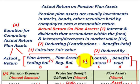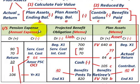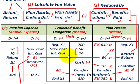Then we would subtract out the difference between the contributions made to the pension fund minus the benefits paid to the retirees. We're really going to be looking at three accounts: our pension expense — the annual expense — our pension benefit obligation — the liability account tracking our pension fund — and then our plan assets, the asset account keeping track of our pension fund.